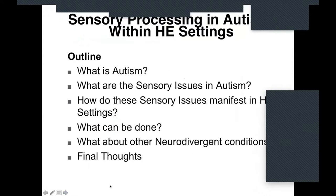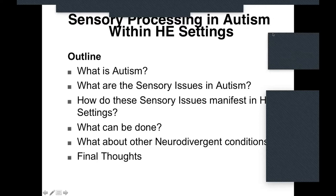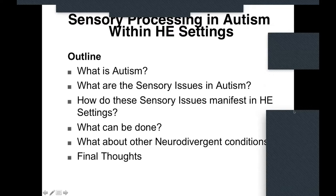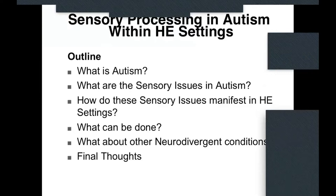This is an outline of the talk. I'll start with what autism is very briefly, then spend most of my time talking about the sensory issues — what they are and how they manifest. In a briefer section, I'll talk about complications in higher education settings. I'll finish with what can be done, how these apply in other neurodivergent conditions, and some final thoughts.